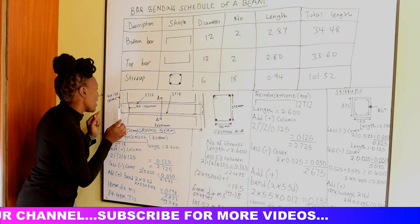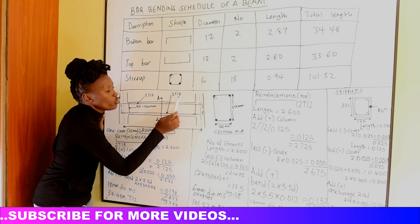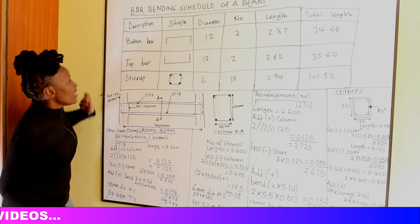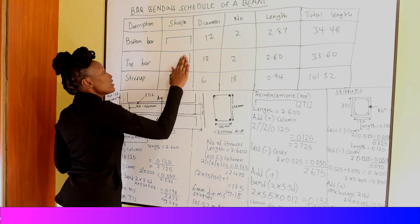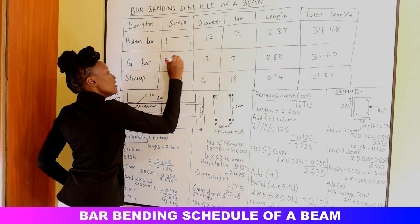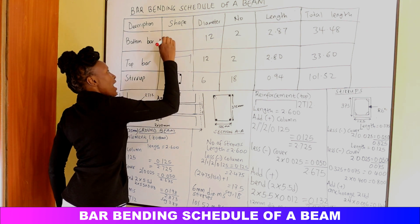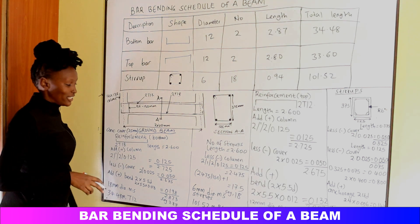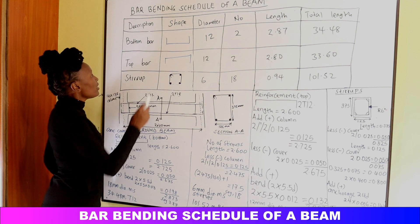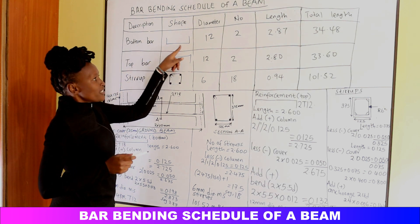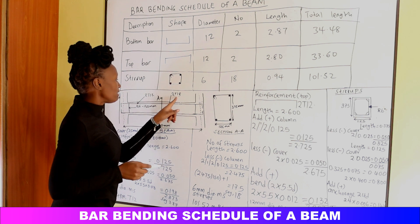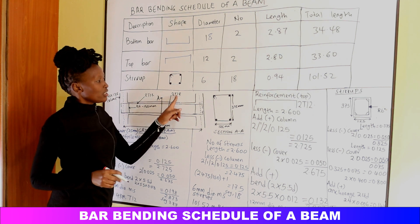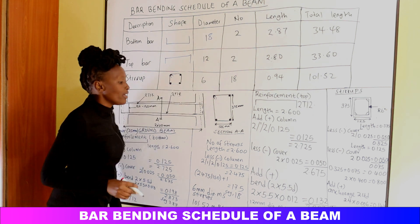The bottom bar is the T18 bar at the bottom of the beam. Note that the top bar faces downward and the bottom bar faces upward in the schedule shape representation. The bottom bar diameter is T18, so 18 mm, and there are 2 T18 bars.